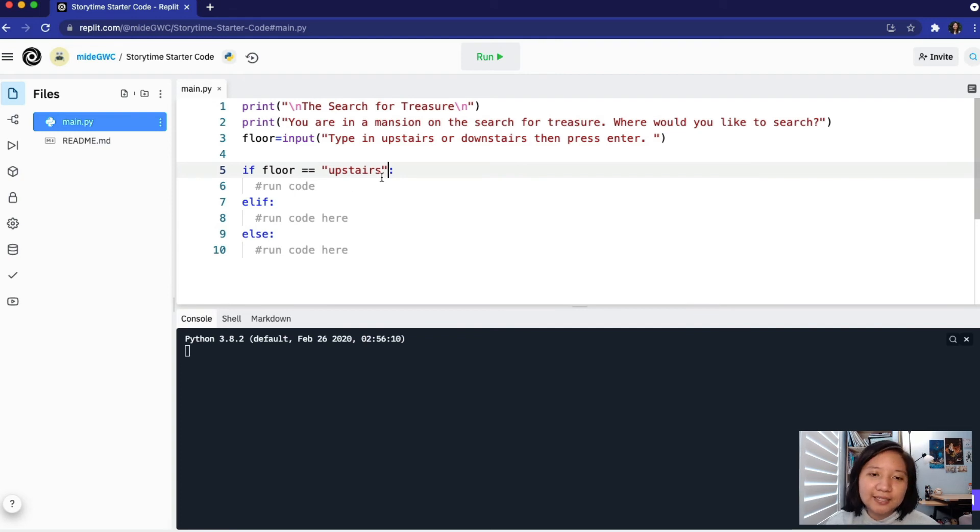We already checked for upstairs, so now we'll check for downstairs. After else if, type in floor double equal sign quotes downstairs to check if the reader typed in the string downstairs.